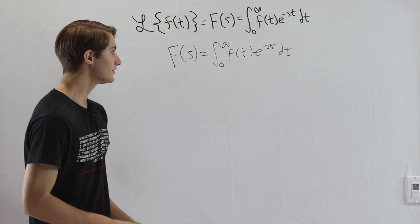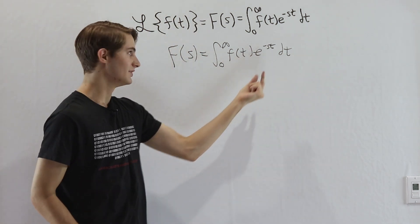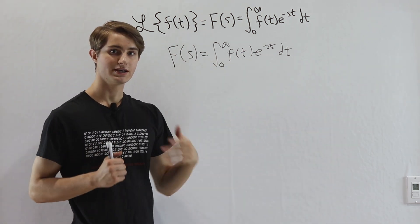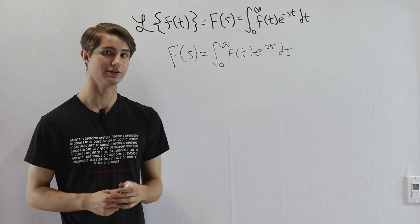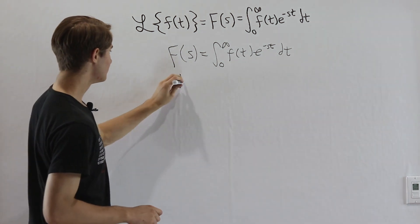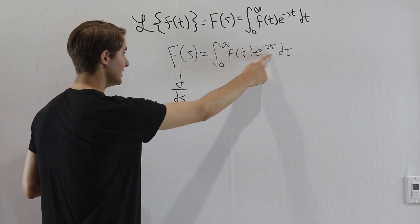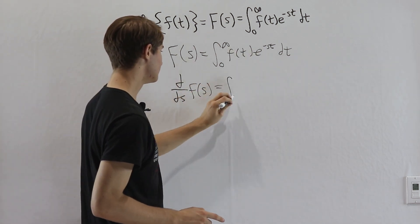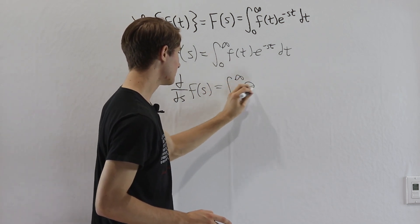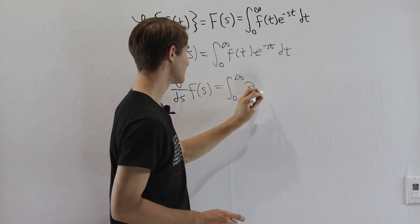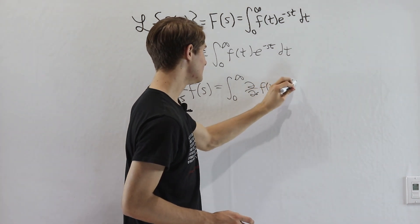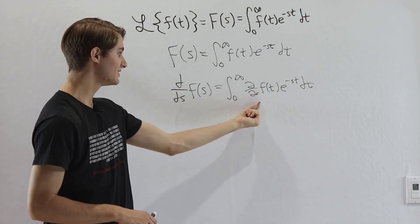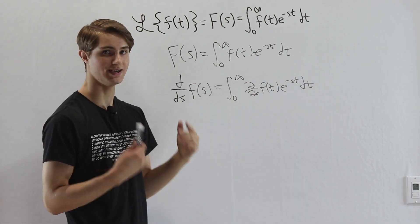We notice that there is an s inside of this integral which is not being integrated at all. So that might make us think to use Feynman's technique for integration, which says that if we take the derivative with respect to s of our function, that equals the integral from 0 to infinity of the partial derivative with respect to s of f of t times e to the negative st. The partial derivative just means we pretend everything that's not s is a constant.